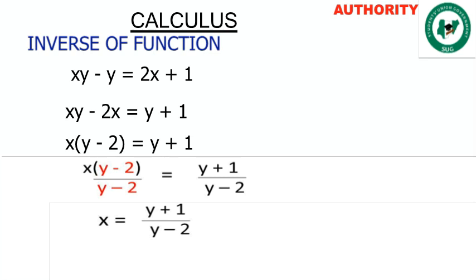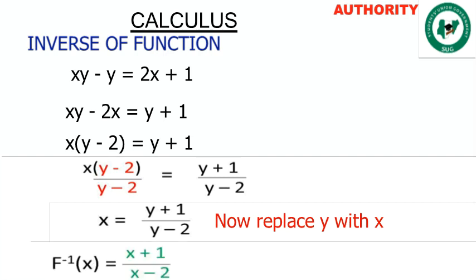So here we replace y with x. That is, anywhere we see y we replace it with x. The x that is standing alone we change to inverse. So we have inverse of f(x) equals x plus 1 all over x minus 2.